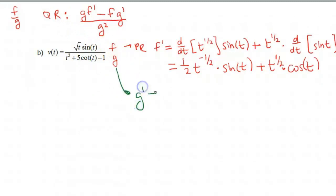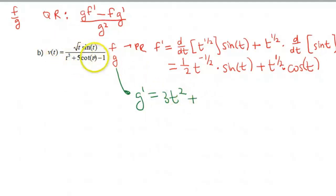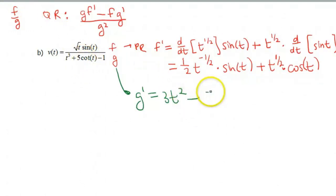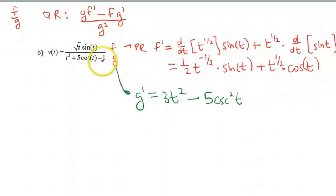Now g prime is going to look like: the derivative of t cubed — that's just a power, so that's 3t squared — plus the derivative of 5 cotangent of t. The derivative of cotangent is negative cosecant squared, so this becomes minus 5 cosecant squared of t. And then minus 1 — the derivative of a constant is 0, so that just goes away.